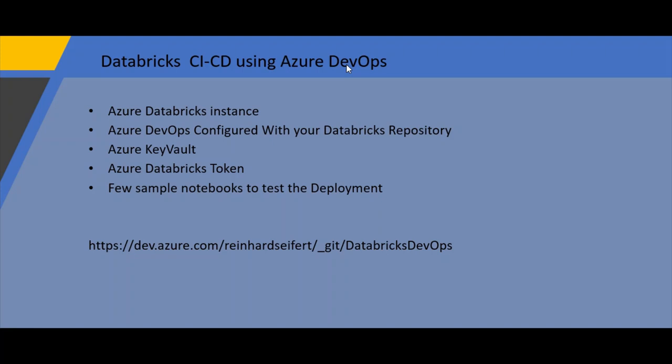So what are the things we need to accomplish this? Of course you need an Azure Databricks instance already created - if you haven't created one you can see how to do it. Then you need to configure a DevOps repository with your Databricks instance, which is also pretty new - they have recently changed the way the repository is created. You also need an Azure Key Vault to save your token securely rather than storing it in your DevOps pipeline, an Azure Databricks token, and a few sample notebooks to test the deployment.